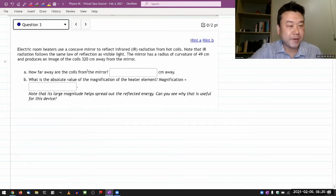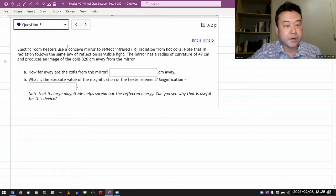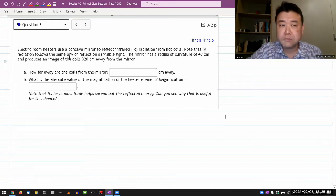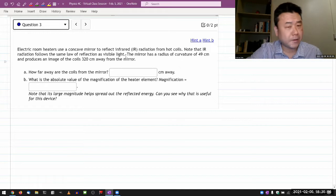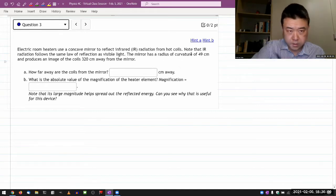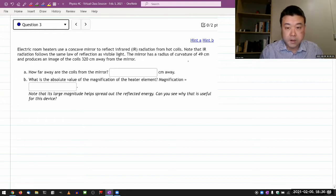It says electric room heaters use a concave mirror to reflect infrared radiation from hot coils. Note that IR radiation follows the same law of reflection as visible light. So the mirror has a radius of curvature, let me just give it a symbol R.